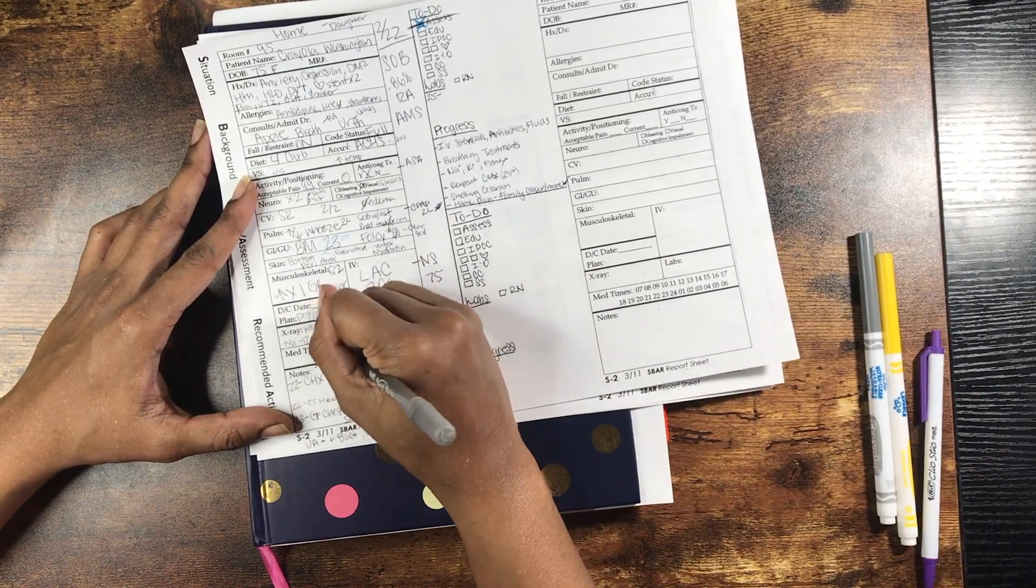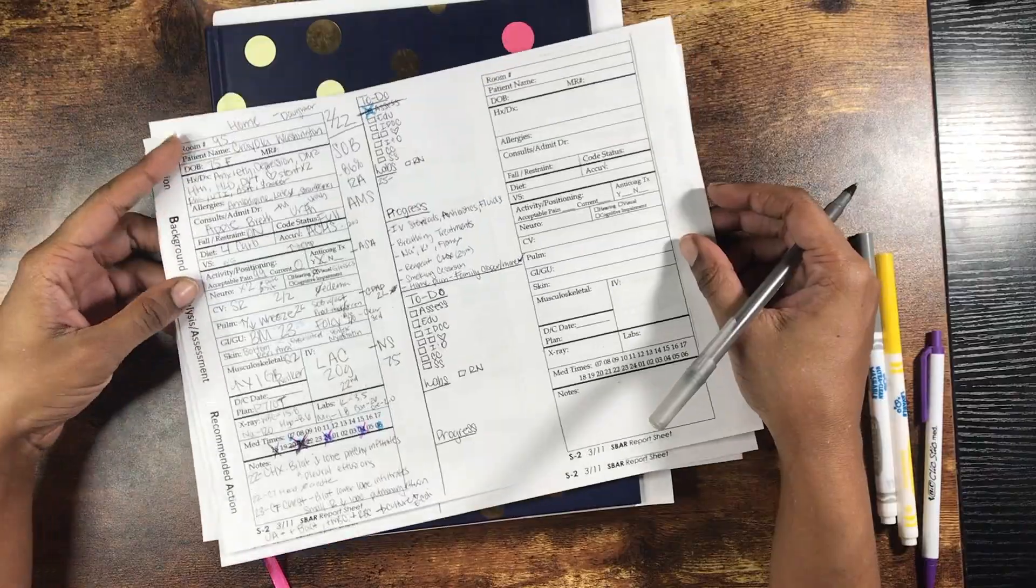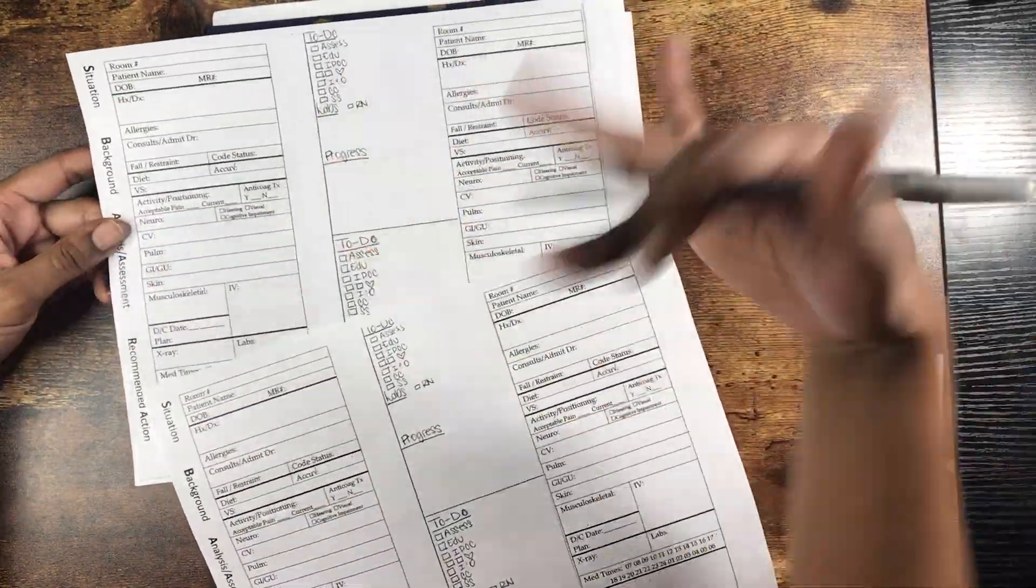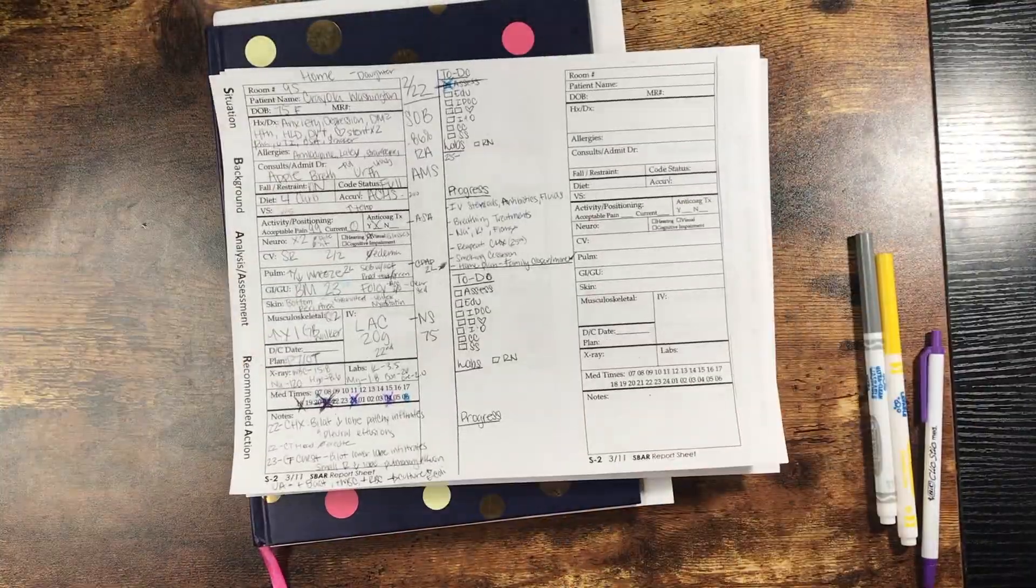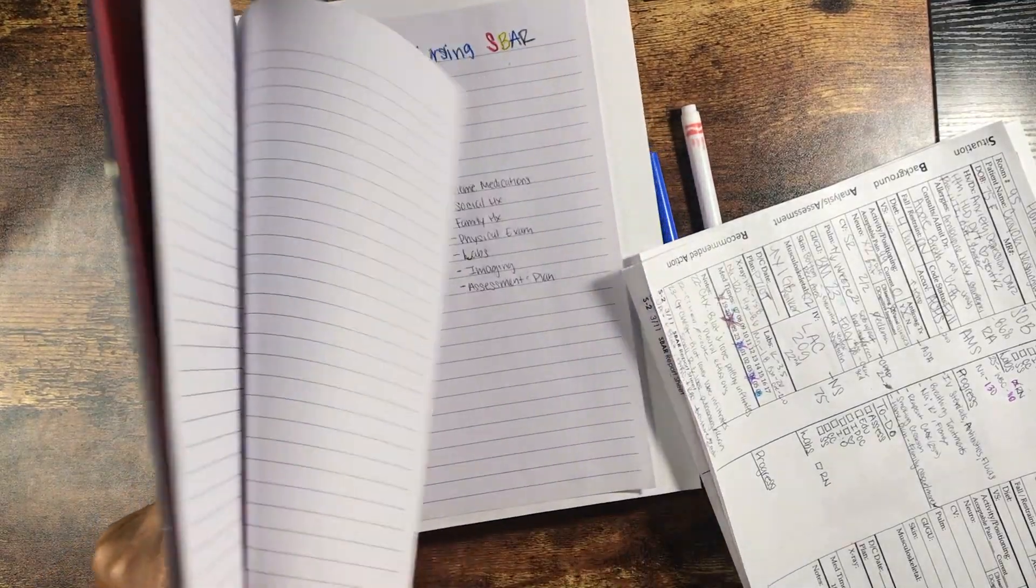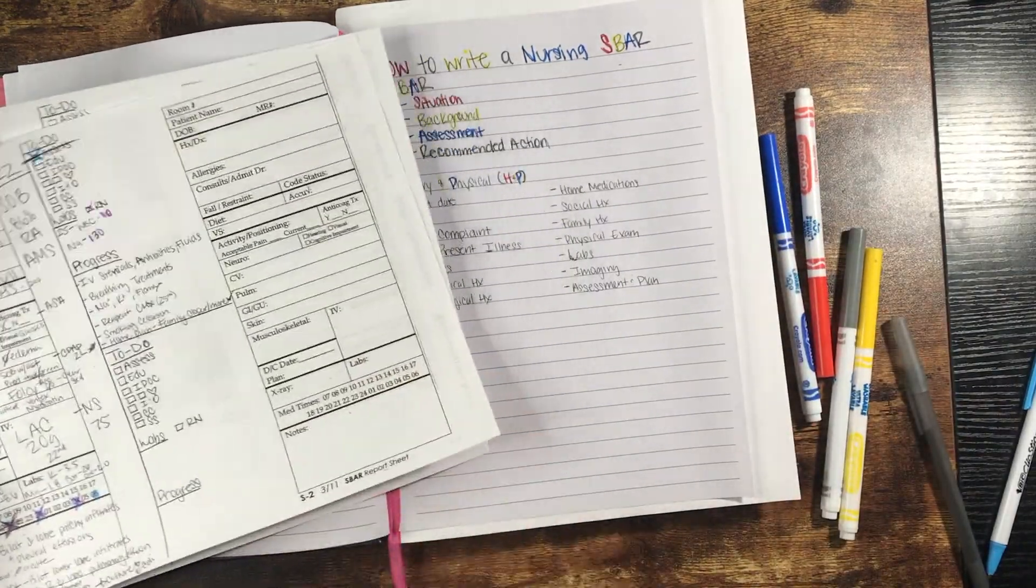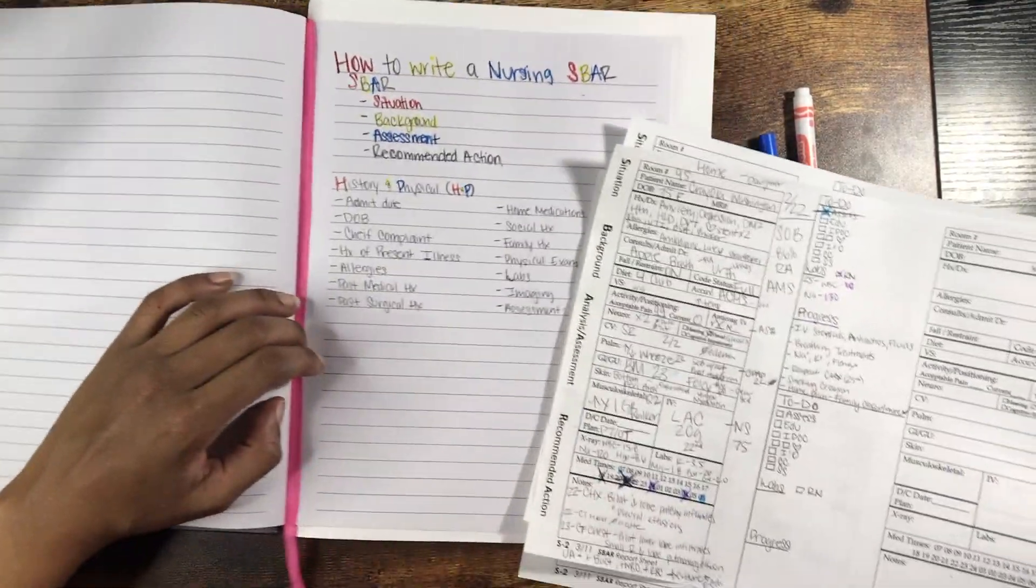With the form that I created, I have enough space for four patients front and back. If I need to, I can always grab another sheet. And all of this information that has been filled in in this SBAR could have been retrieved or obtained from the H&P.